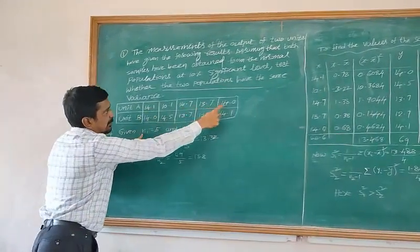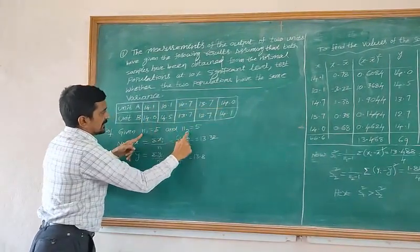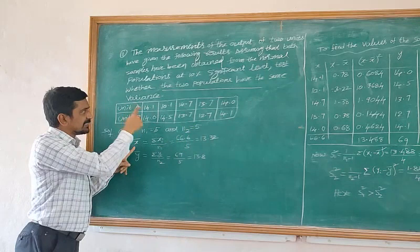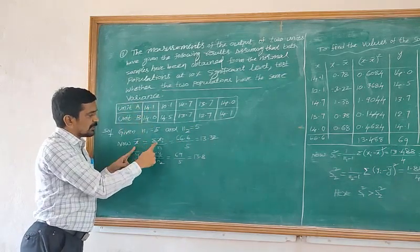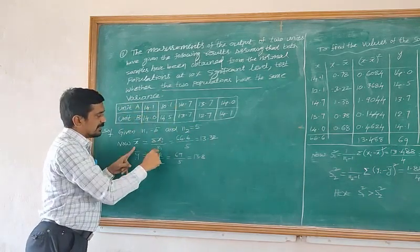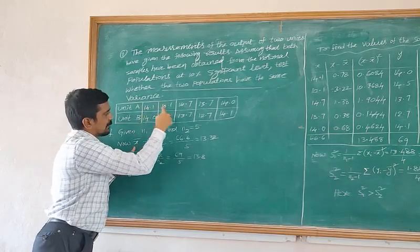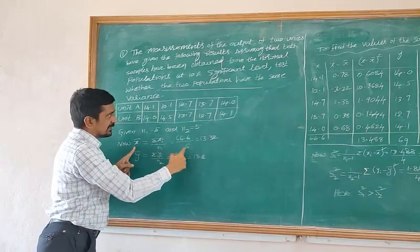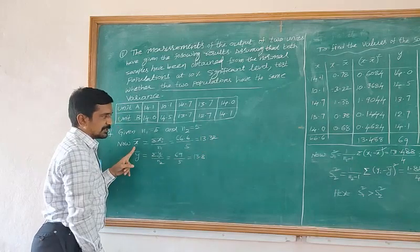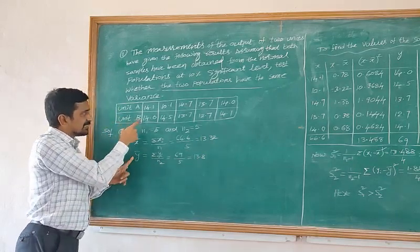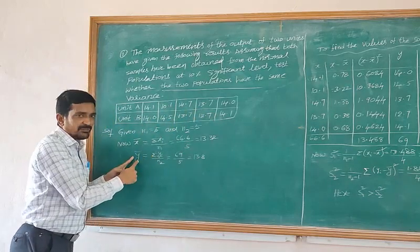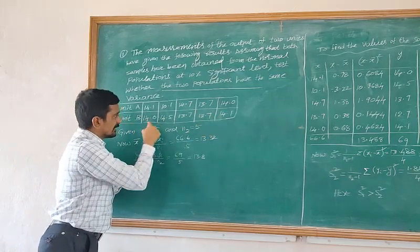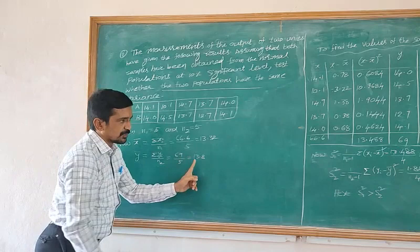The first sample has 5 values. The mean of the first sample, X-bar, equals the sum of values divided by number of values, which is 66.6 divided by 5, giving 13.32. Similarly, Y-bar equals the sum of Y values divided by 5, which is 16 divided by 5, giving 30.1.